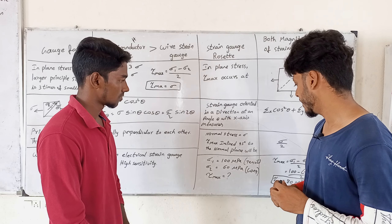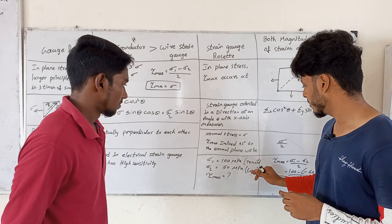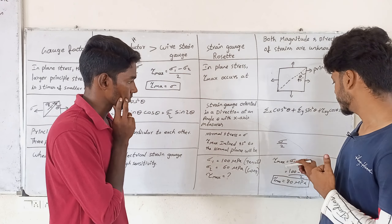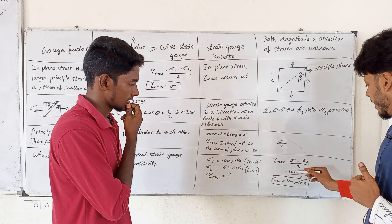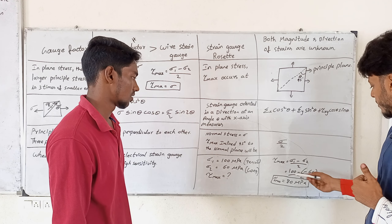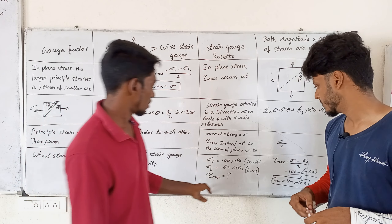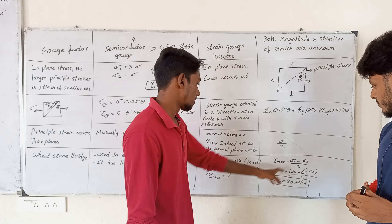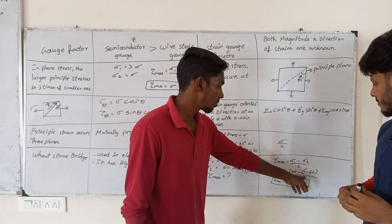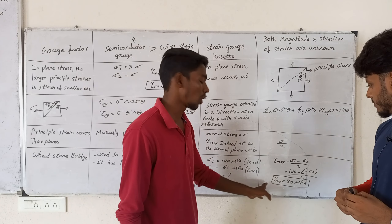Now, tensile stress is positive and compressive stress is negative. When we substitute, tau-max equals sigma-1 minus sigma-2 by 2, which is 100 minus (−60) divided by 2, giving 160 by 2. So the maximum shear stress tau-max is 80 MPa.